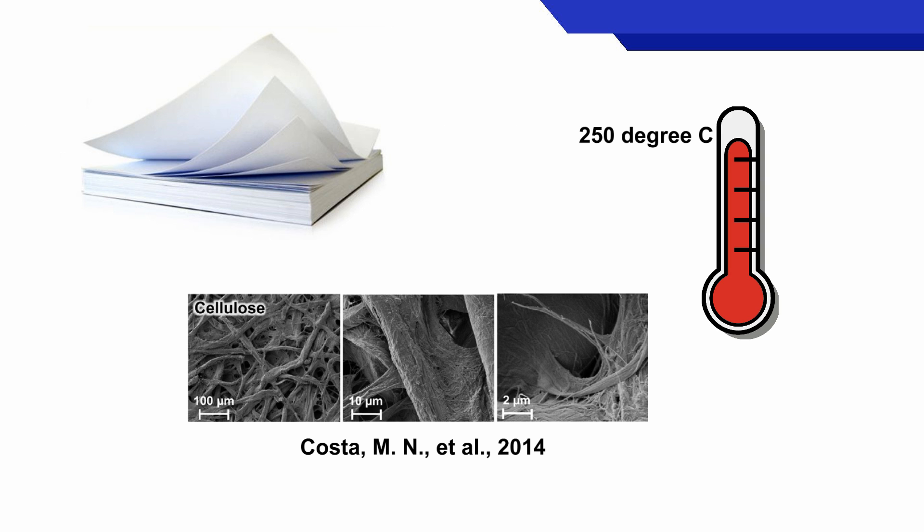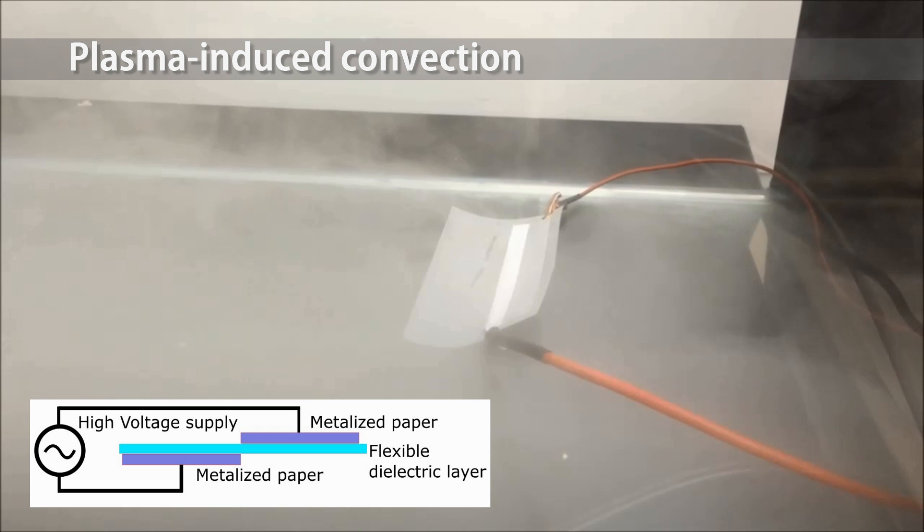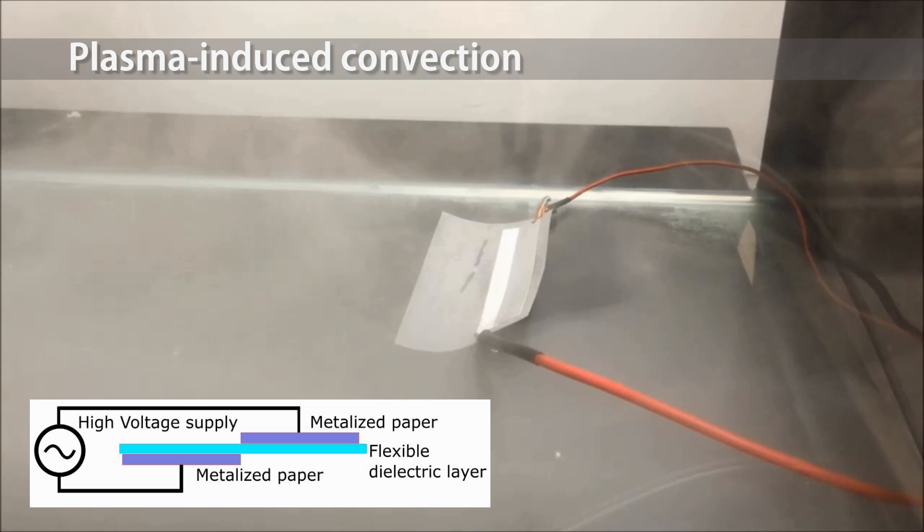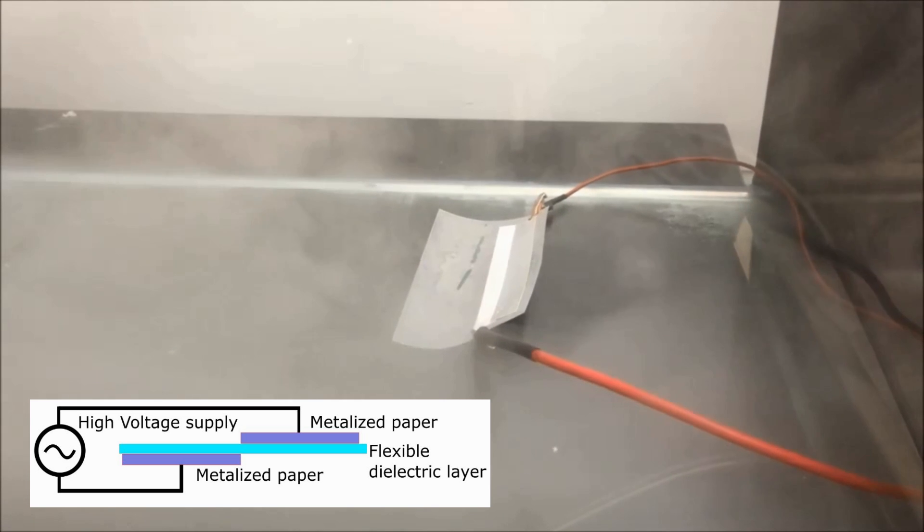These properties make paper a fitting material for atmospheric plasma generators, as its permeability allows the flow of gas through the substrate to provide fuel for the plasma and to cool the paper with forced convection.